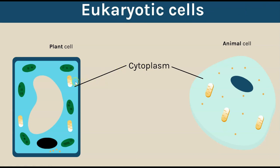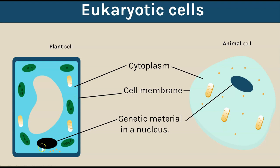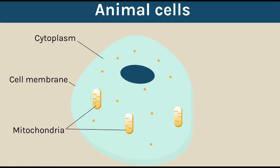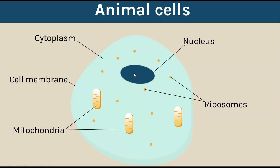Some of the key structures inside a eukaryotic cell are: they have cytoplasm, they have a cell membrane, and they have genetic material that is within a nucleus rather than loose in the cytoplasm. Now we're going to go into more detail on the different structures and what their functions are in the animal cells and the plant cells. So let's start with an animal cell - they have cytoplasm, cell membrane, but they also have mitochondria.